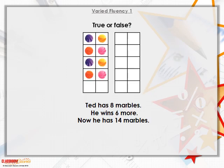Let's have a look at these number grids. They're tens frames. Ted has eight marbles that he's put in the first tens frame. He wins six more marbles. Has he got fourteen marbles altogether? That's right, he has. So we had eight, and six more makes fourteen altogether.